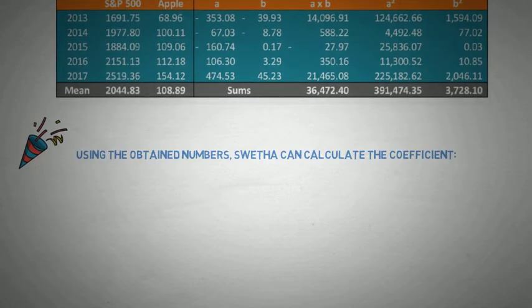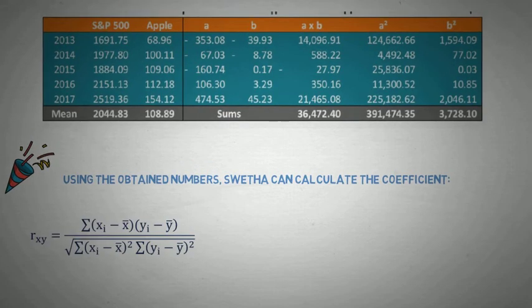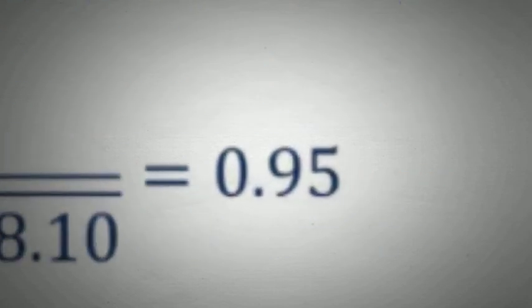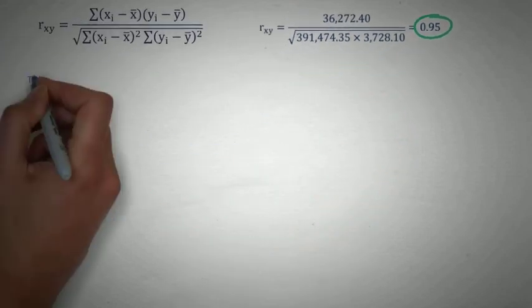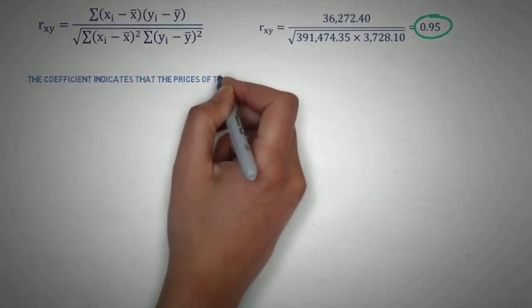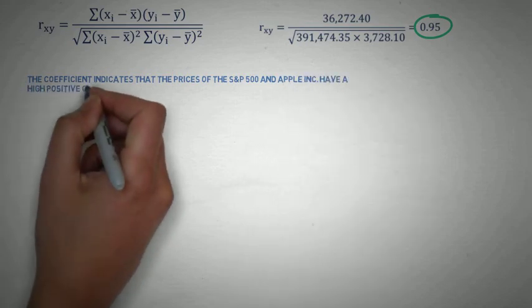So finally now by using the obtained numbers, Swetha can calculate the coefficient which is 0.95. Having positive correlation, this means that their respective prices tend to move in the same direction.